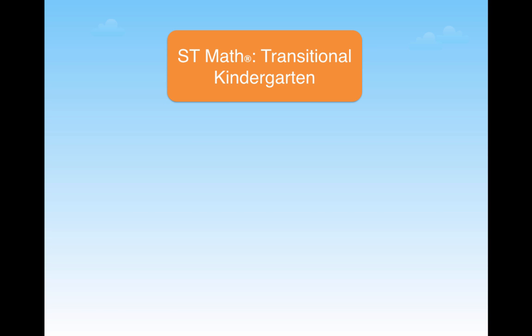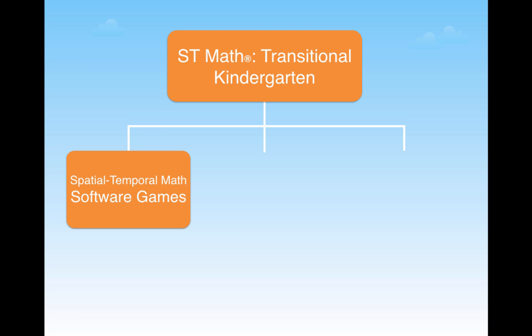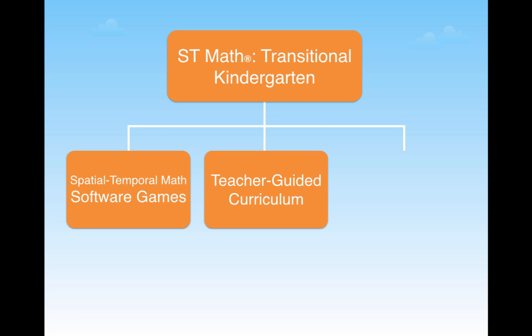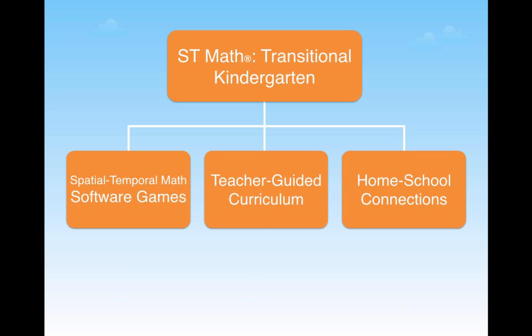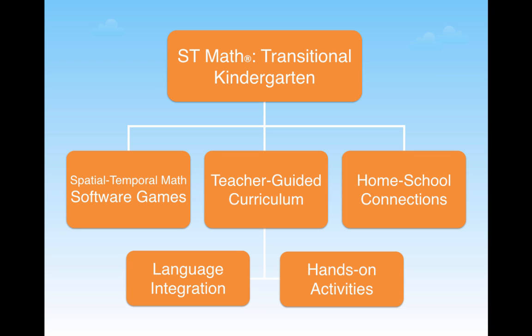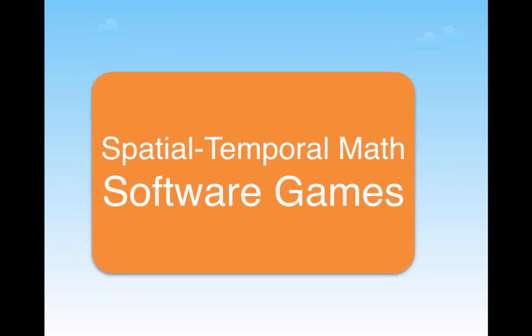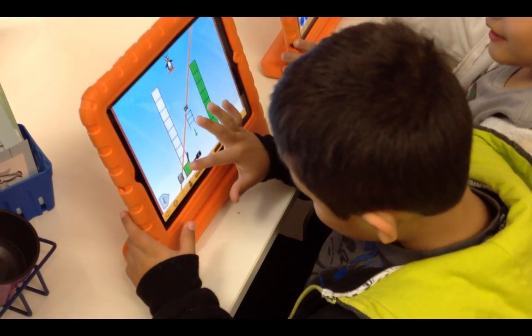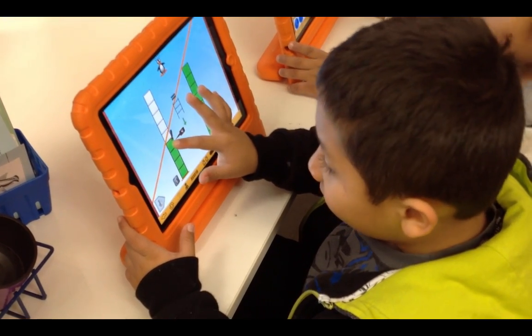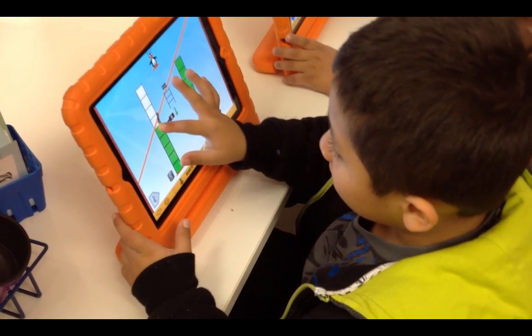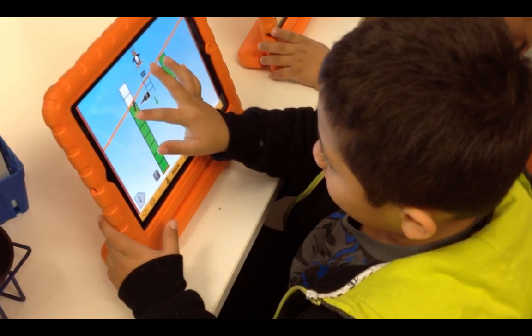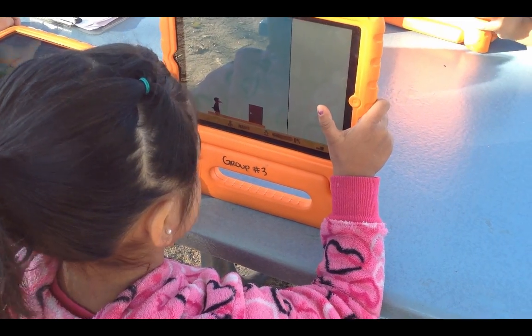ST Math for Transitional Kindergarten combines a proven visual learning software component with teacher-directed activities and more to create a multimodal math education experience. Based on applied neuroscience research, the ST Math Transitional Kindergarten software component engages students in developing a deep conceptual understanding of mathematics through manipulating visual models to solve problems in a self-paced, mastery-based environment.